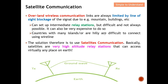Countries with many islands have hills and terrain that make it very difficult to connect using wire lines. For example, Indonesia has many islands, so we can't run fiber optic everywhere. Especially in rural areas, countries like Indonesia rely very heavily on satellite communication for connectivity to the rest of the world. Therefore, we need satellite communication — satellites are very high-altitude relay stations that can reach virtually any place on earth.